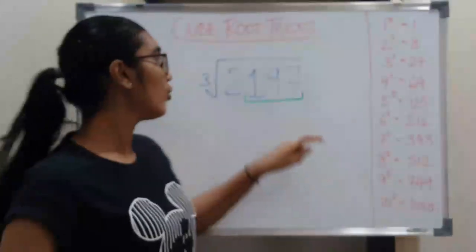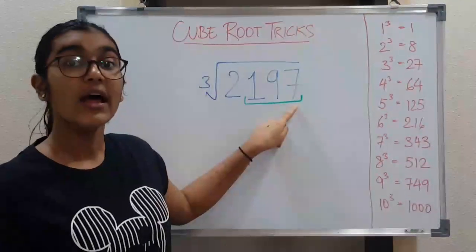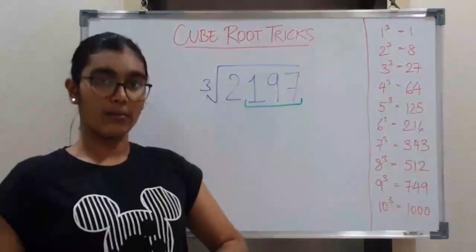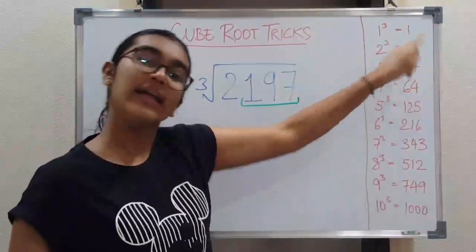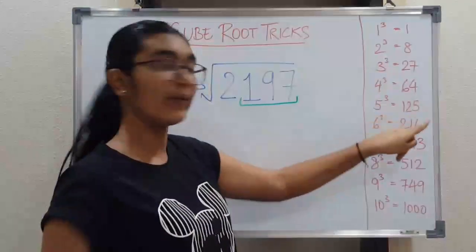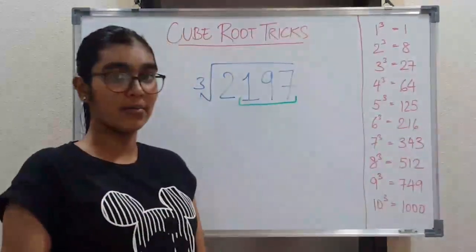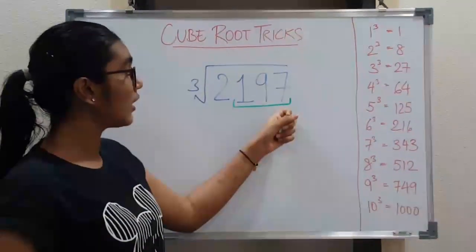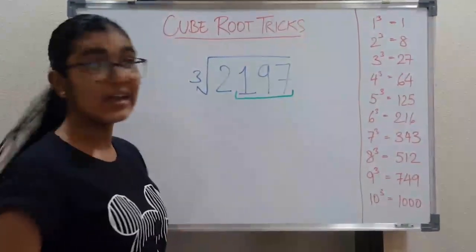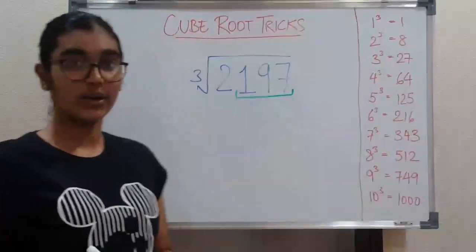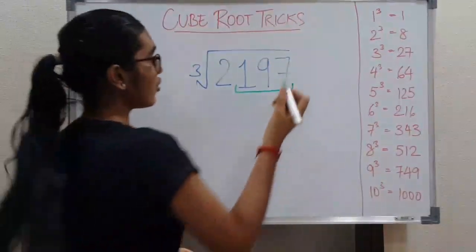Now you need to find out what cube number this ends at. For example, if you see 2 cube is 8, so it ends at number 8. 5 cube is 125, so it ends at number 5. So what number will give you a cube that ends at 7? There is a good pattern that you need to remember for this.